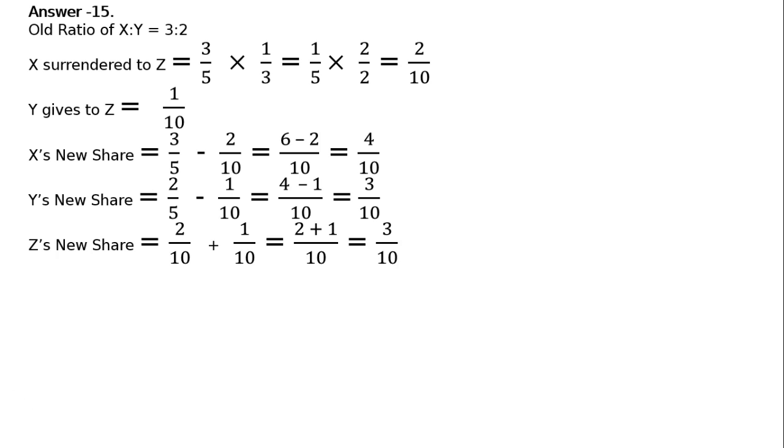Then, Z's new share. Z is getting 2 tenth from X. And 1 tenth from Y. That is 2 by 10 plus 1 by 10. That is LCM 10. 2 plus 1. 3 by 10. Therefore, the new ratio of X is to Y is to Z is equal to 4 is to 3 is to 3.